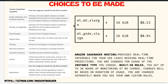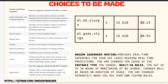We will be working with ml.m5.xlarge and ml.g4dn.xlarge instances. The m5 is a 4 vCPU 16 GB memory-optimized machine, while the g4dn is an accelerated machine. The g4dn is a bit costlier and the m5 is cheaper. We will be deploying on the m5 instance and I'll show you how to do that.